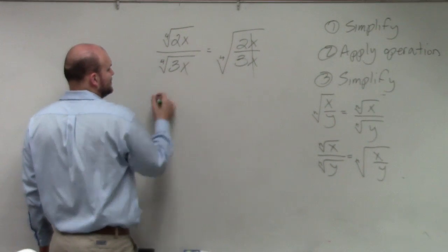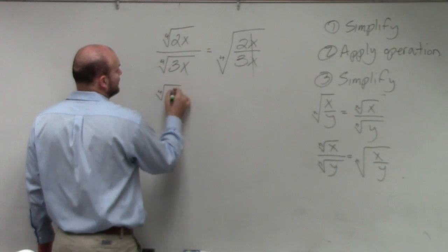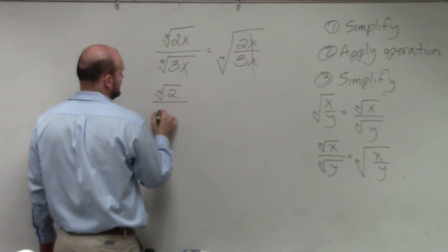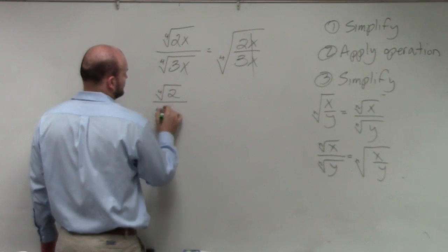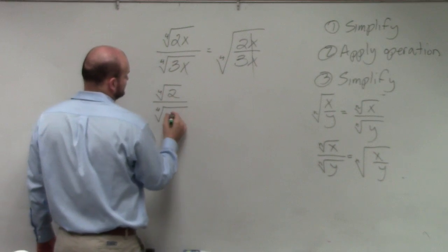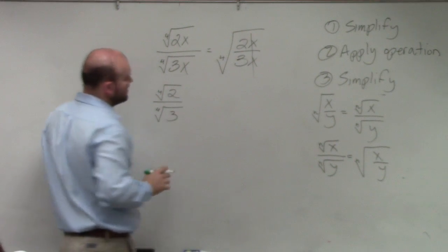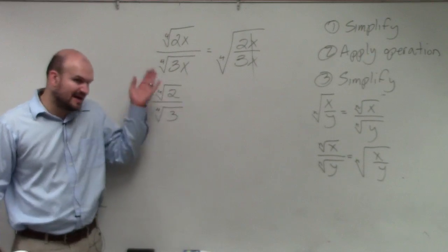Now for understanding, though, I'm going to rewrite this back as the fourth root of 2 divided by the fourth root of 3. So I'm going to break it back up. Because 3 doesn't divide it into 2.